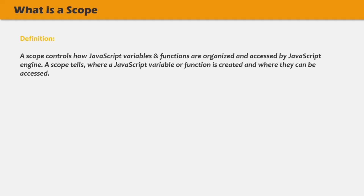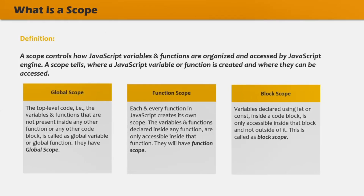Scope controls how JavaScript variables are organized and accessed by the JavaScript engine. A scope tells where a JavaScript variable and function lives, and where we can access a certain variable or function and where we cannot. In more simple words, scope of a variable or function is the entire region inside which that variable or function can be accessed and used. In JavaScript, we have three types of scope: global scope, function scope, and block scope.